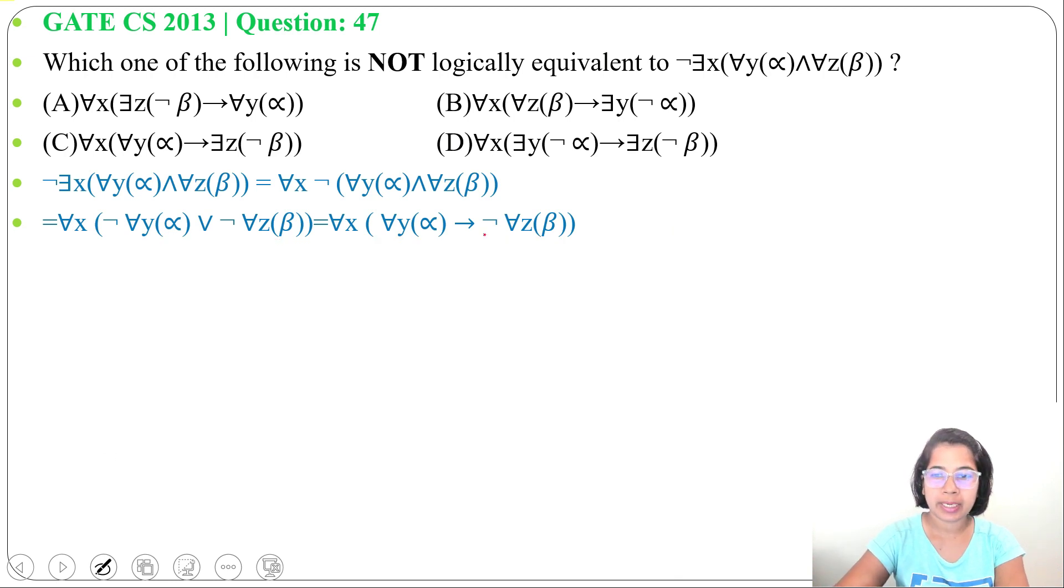Now again we can take this negation symbol inside. So this universal quantifier will change to existential quantifier. It will be for all X, for all Y, alpha implies there exists Z negation of beta.